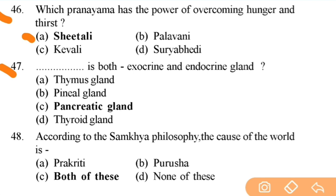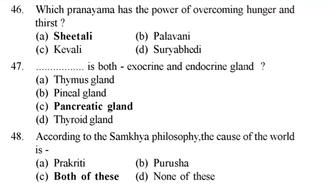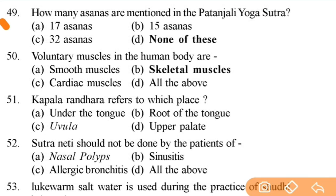Dash is both exocrine and endocrine gland — right answer is C — pancreatic gland. Next: according to Sankhya philosophy, the cause of the world is — right answer is C — both Prakriti and Purusha — very important. Next: how many asanas are mentioned in Patanjali's Yoga Sutras? Right answer is none of these. Next: voluntary muscles in the human body are skeletal muscles.